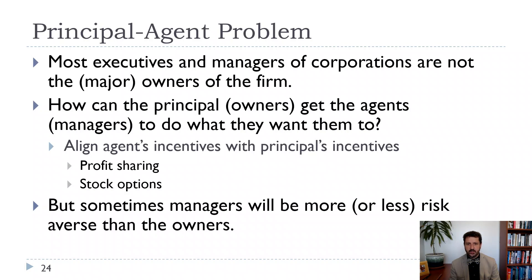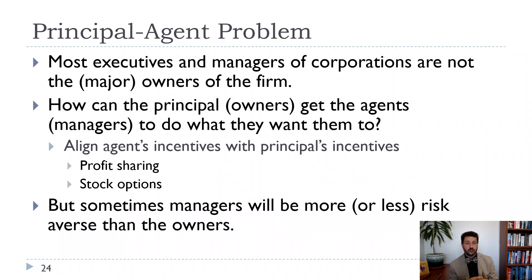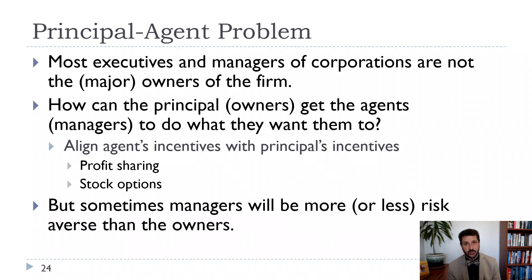Another issue is that managers may have different risk tolerances than the owners. If managers are more risk averse, they'll make safer decisions than the owners would want — perhaps because they don't want to lose their job. On the other hand, shareholders might have a longer time horizon than managers. A manager who expects to stay two to four years and then move on might want to load up on risk to maximize their payout, especially if incentivized with profit sharing and stock options — making them more risk-loving than shareholders. One question in the financial crisis was how much the shift from partnerships to public companies in investment banking impacted risk tolerance and whether those firms took on more risk than they otherwise would have.